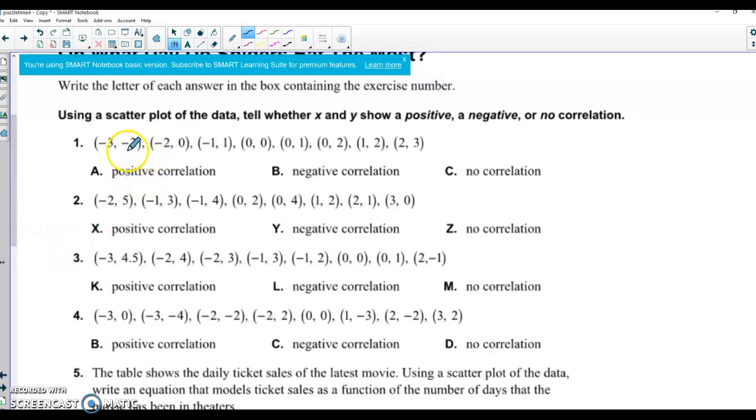If I look at like number 1 here, we're looking at the Y's, so from negative 2 to 0, so going up, 0 to 1, going up, then back down, then up again, then up, then staying the same, and then up. So most of the time I said those were going up, so we're going to do a positive correlation on that one.